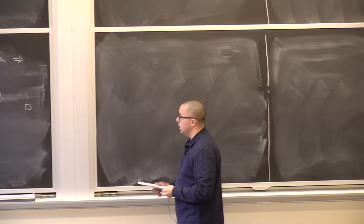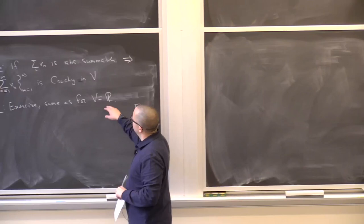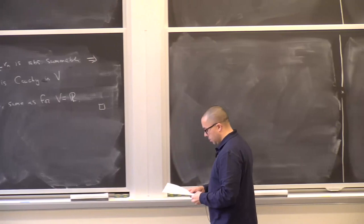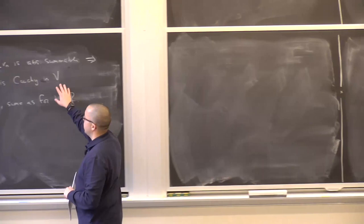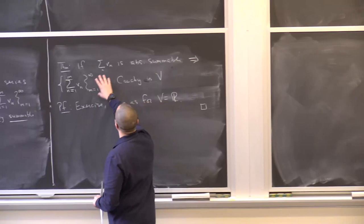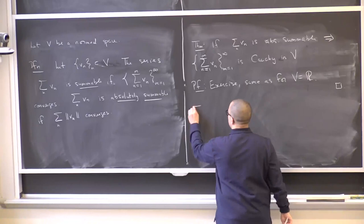Now, I said something which is strictly weaker than what you encounter in the case V equals R. In the case V equals R, if you have an absolutely summable series then it's summable — every absolutely convergent series is convergent. But I didn't say that here; I just said that the sequence of partial sums is Cauchy, not necessarily convergent. So when can I say that an absolutely summable series in this normed space is summable?